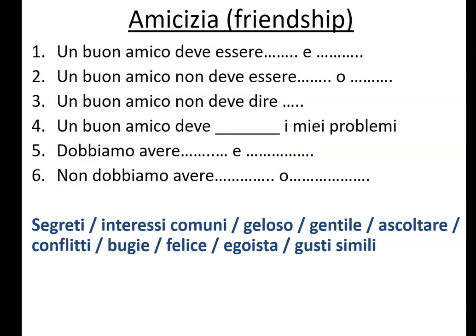So if I give you an example for number one: a good friend must be something and something - I'm guessing you probably wouldn't choose geloso and egoista, because that would translate as a good friend must be jealous and selfish. So think what would make most sense. Pause, because it's going to take you a few minutes - you need to come up with the best possible answer for each phrase.